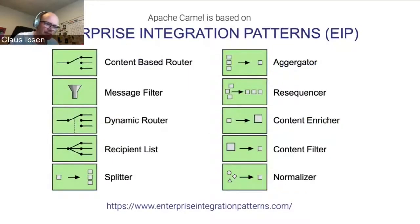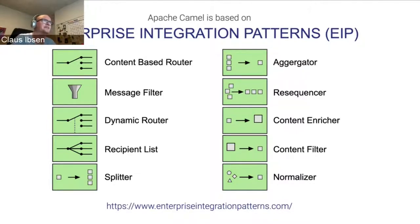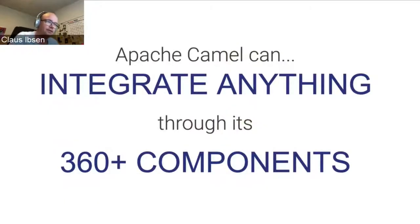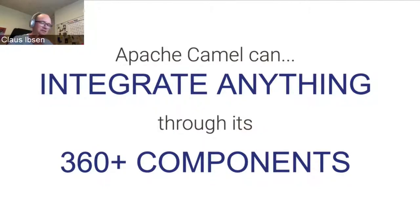The idea behind Camel actually came from enterprise integration patterns — from a book published 15 years ago. That book has common integration solutions known as design patterns. What was done is to implement software that comes with these design patterns out of the box, and that's Camel. Camel also comes with a lot of components, or connectors — you can connect to more than 300 systems with Camel and basically integrate anything. If not, you can always build your own component.